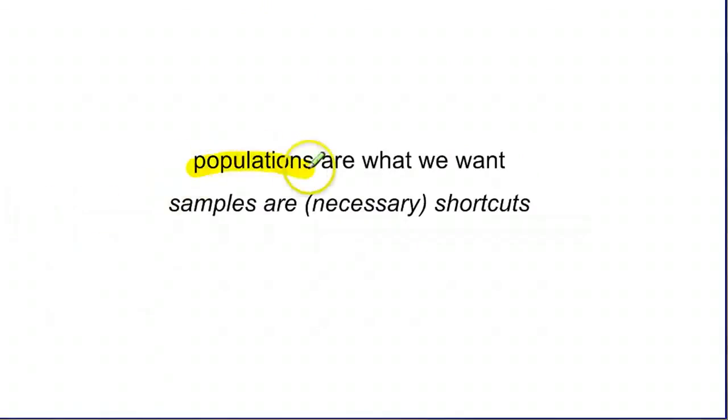At the end of the day, we want to know things about populations. Populations of interest are called populations of interest because that's what we want to know about. We don't necessarily want to know about a thousand Americans, we want to know about all Americans. We don't want to know about ten students, we want to know about all students in whatever school or whatever state.